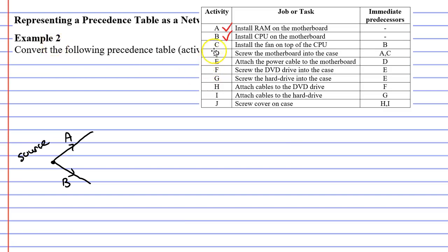So now moving on to activity C we can see that activity C comes after activity B. So we need to complete activity B first and we do that by drawing a vertex and then activity C comes after that. So let's tick off activity C and now look at activity D.